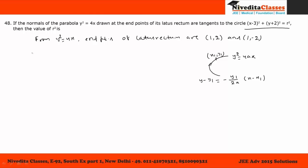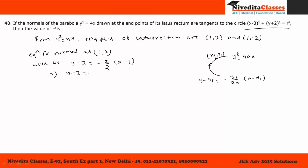The equation of the normal at the point (1, 2) is: y − 2 = −2/2 × (x − 1), which gives y − 2 = −x + 1, and therefore x + y − 3 = 0.